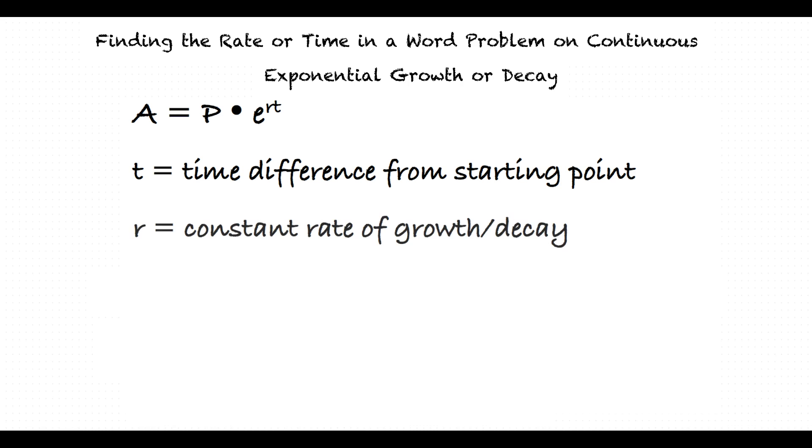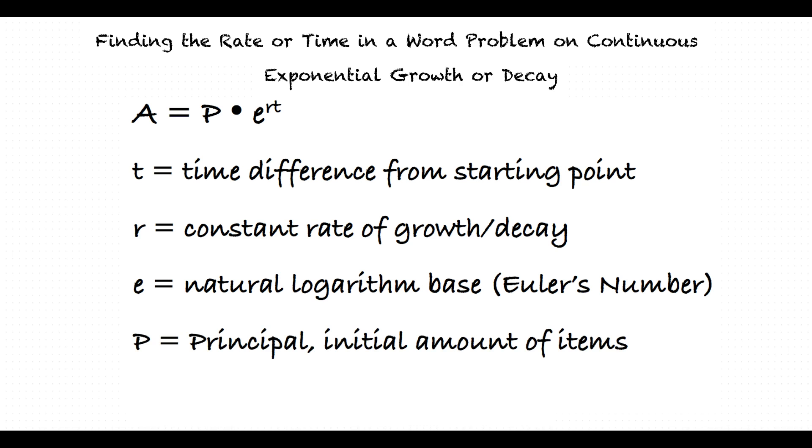e is the natural logarithm base, also known as Euler's number. P represents the principal or initial amount of items and A represents the final amount of items.